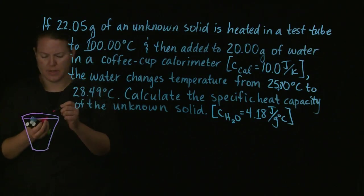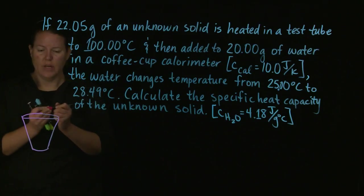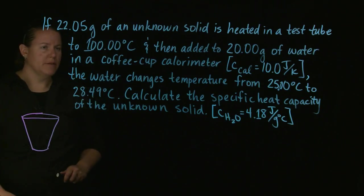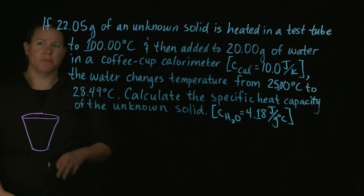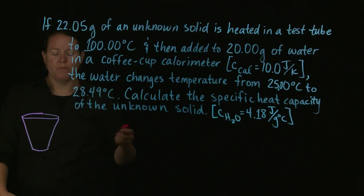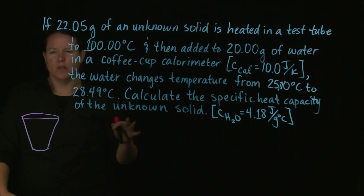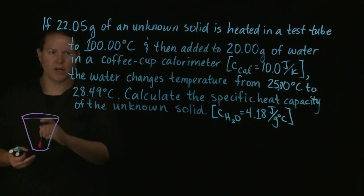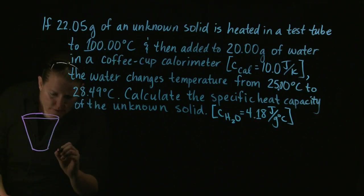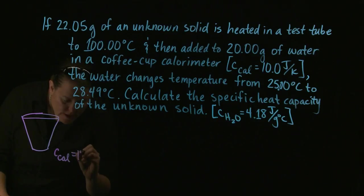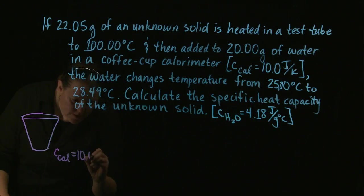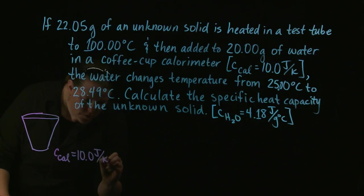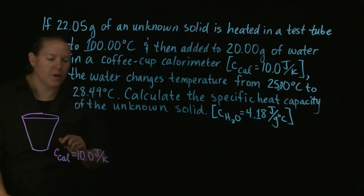That's the basics of calorimetry. Coffee cup calorimetry is the same idea, except we can measure this with a thermometer. But you're still measuring heat changes a little bit indirectly. So there's my coffee cup calorimeter. I know that the C of the calorimeter is 10.0 joules per Kelvin.